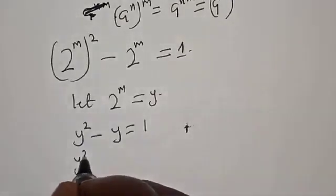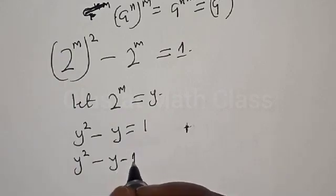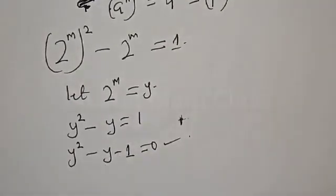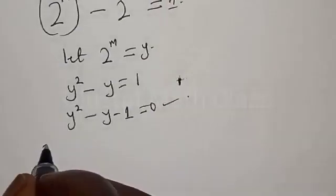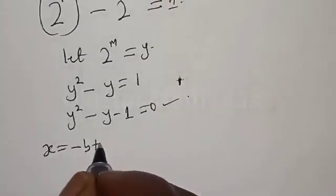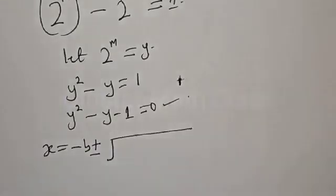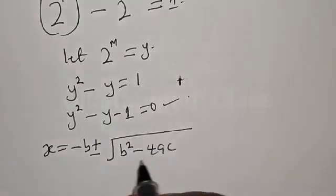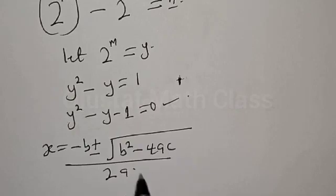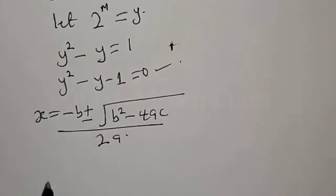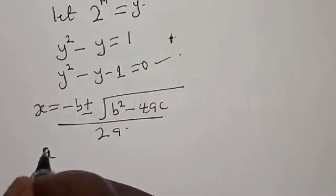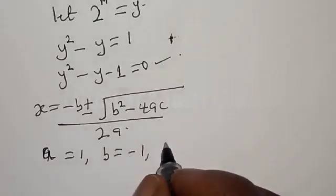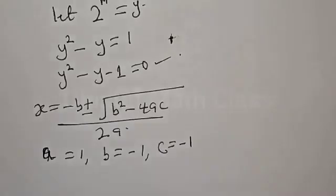Then we have y squared minus y minus 1 equal to 0. This is a quadratic equation. We can solve this using the quadratic general formula. We identify a equal to 1, b equal to minus 1, and c equal to minus 1.